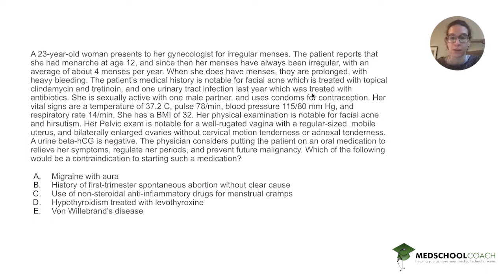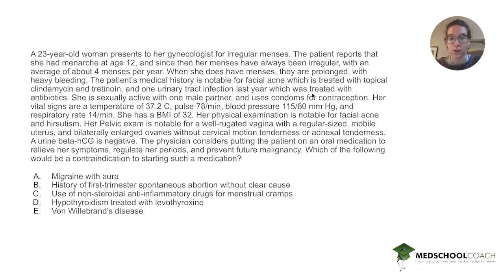Physical examination is notable for facial acne and hirsutism. Pelvic exam reveals a well-rugated vagina with a regular-sized mobile uterus and bilaterally enlarged ovaries, without cervical motion tenderness or adnexal tenderness. Urine beta-HCG is negative. The physician considers putting the patient on an oral medication to relieve her symptoms, regulate her periods, and prevent future malignancy. Which of the following would be a contraindication to starting such a medication?